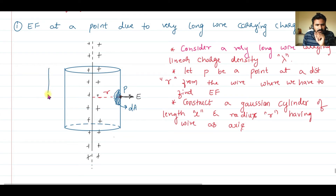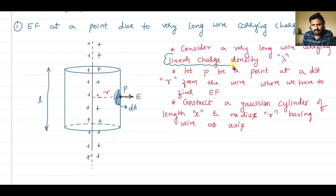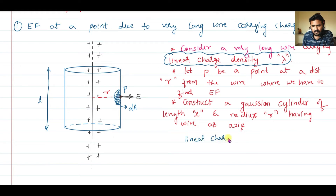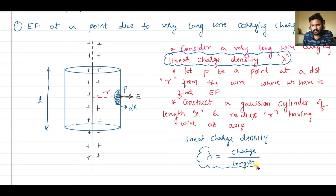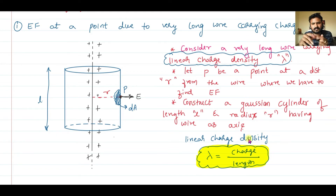The length of the cylinder is L. The linear charge density lambda means charge per unit length on the wire. Linear charge density lambda is nothing but total charge in the wire divided by total length of the wire — giving charge per unit length. So lambda is the charge present per unit length of the wire.